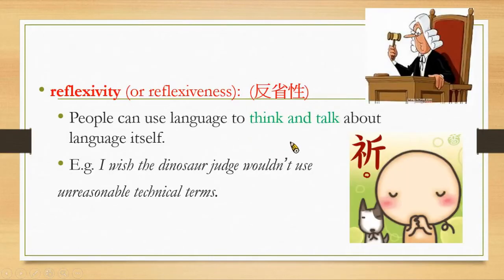If we talk about this kind of situation, people can use language to think and talk about language itself. We say we have reflexivity, or reflexiveness. For example: 'I wish the dinosaur judge wouldn't use unreasonable technical terms.' In this sentence, you make a wish and you talk about this kind of spatial situation — that's why we say reflexivity.